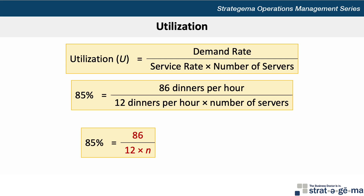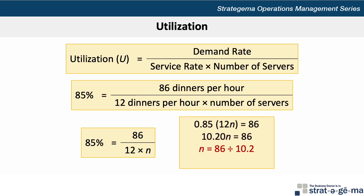Using some cross multiplication, we can reduce this equation to 0.85 times 12n equals 86. This turns into 10.2n equals 86, and we can isolate and solve for n by taking 86 divided by 10.2, which is the utilization rate times the service rate. The result is that n equals 8.43, which rounds up to 9 servers.